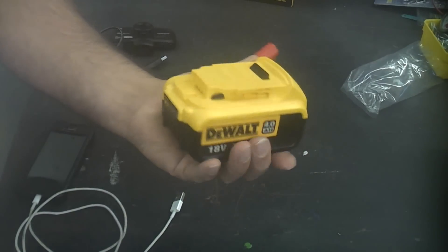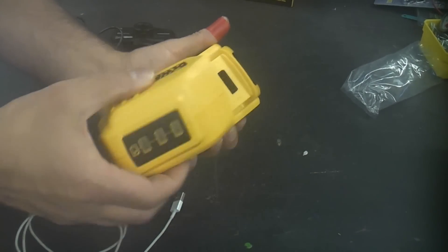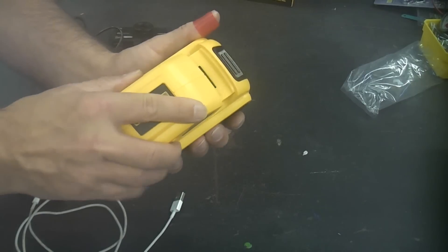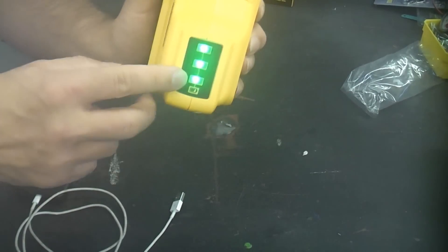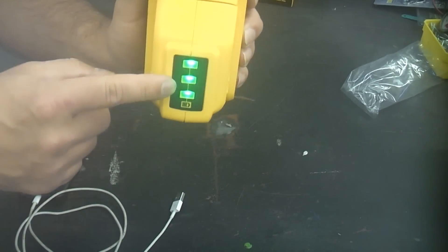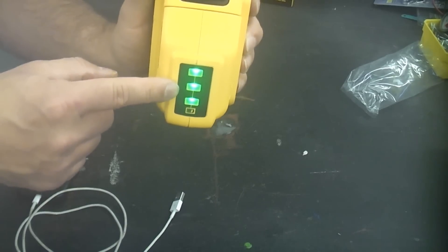This is an 18 volt DEWALT XR battery. All you do is take the USB charger and just simply slide that on. It'll then check the battery and it will come up with a charge indicator showing how much charge is in the battery.